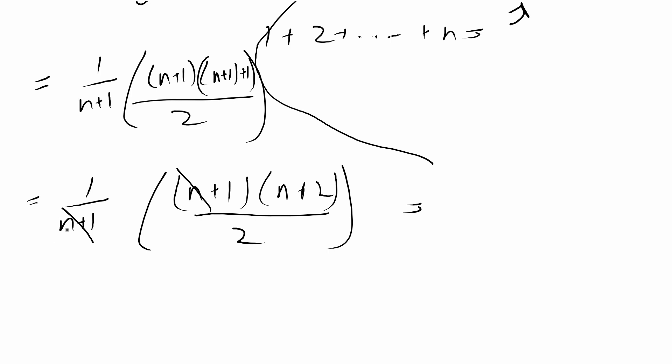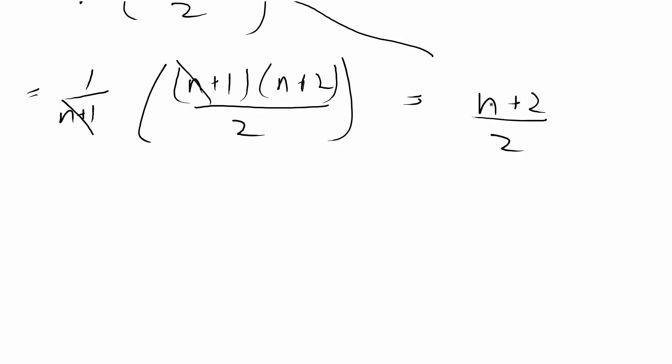With this, the numerator and the denominator cancel out. So you get n plus 2 over 2, and obviously in that case, you know that the big O notation is going to just be O(n). And that would be your final answer. So we're done with this problem.